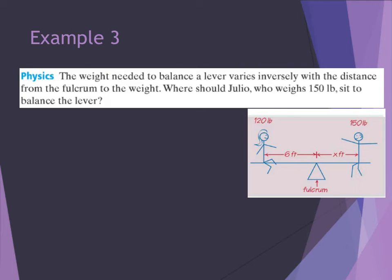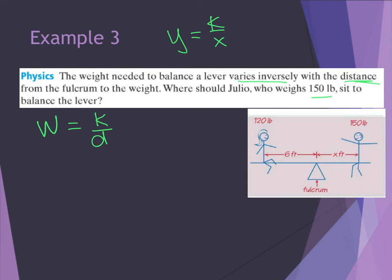For example 3, the weight needed to balance a lever varies inversely with the distance from the fulcrum to the weight. It asks where Julio, who weighs 150 pounds, should sit to balance the lever. Looking at the picture, a girl weighs 120 pounds and is 6 feet from the fulcrum. So 120 equals k divided by 6. Multiplying both sides by 6, I get k equals 720.